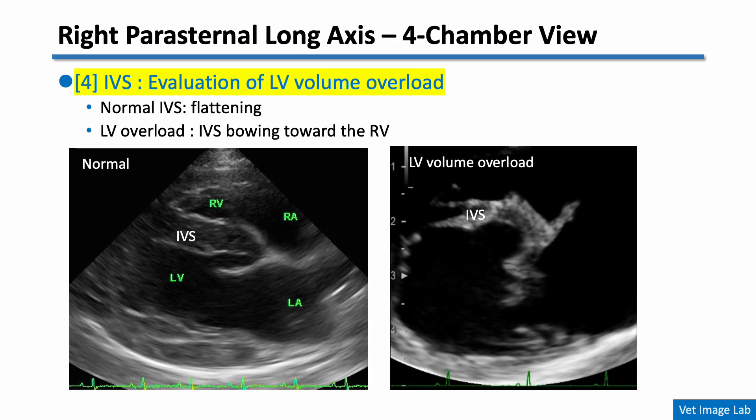Now let's move on to the interventricular septum, or IVS. In a normal heart, the IVS appears relatively flat and straight in the long axis view. But in cases of left ventricular volume overload, like in dogs with mitral regurgitation, you may see the IVS bowing toward the right ventricle.